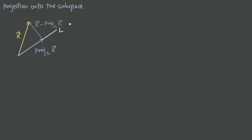Because we're talking about orthogonal complements, if we call the projection vector v and this orthogonal vector w, then we can say that v is in the subspace L. If that's the case, then w has to be a member of the orthogonal complement of L, because w is perpendicular or orthogonal to v. So here for the first time we have L as a subspace and L-perp as a subspace, and v lies along L while w is a member of L-perp, where L and L-perp are orthogonal complements of each other.